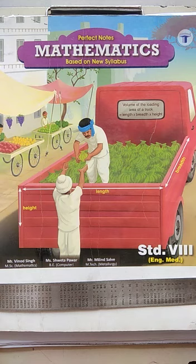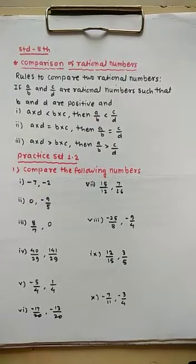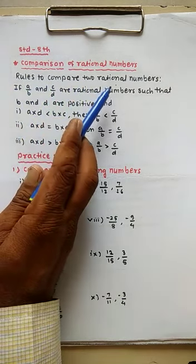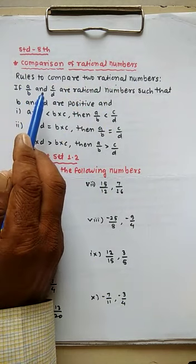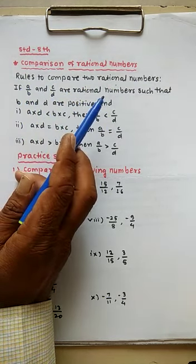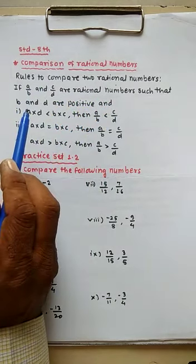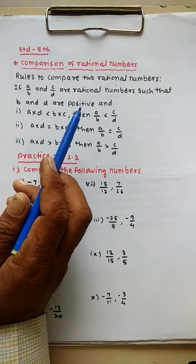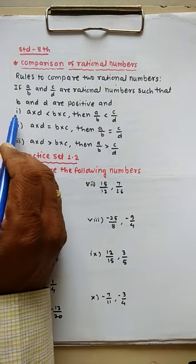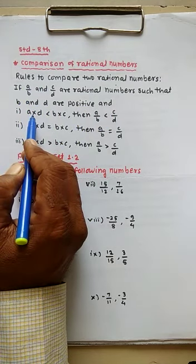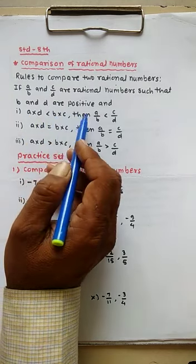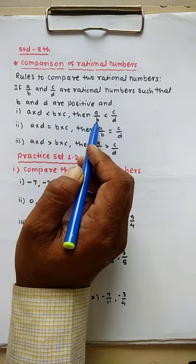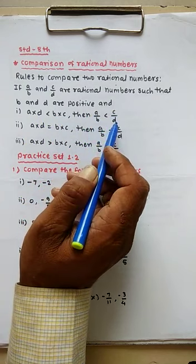Comparison of rational numbers. Rules to compare two rational numbers. If A divided by B and C divided by D are rational numbers such that B and D are positive, and A multiplied D is less than B multiplied C, then A divided by B is less than C divided by D.